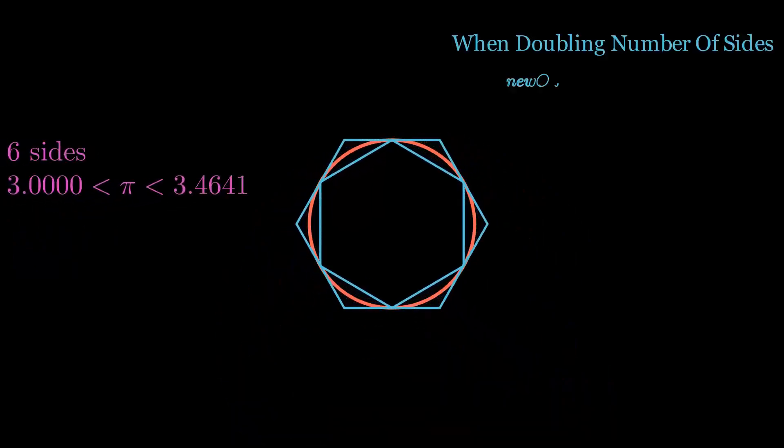The problem is that we don't know how to calculate the perimeter for an arbitrary number of sides without using information Archimedes didn't have, such as the value of pi itself. So what did he do?